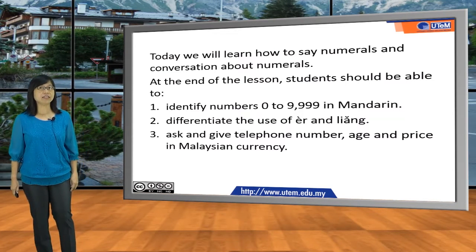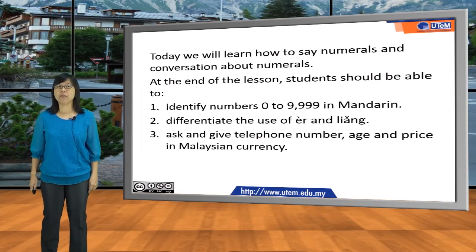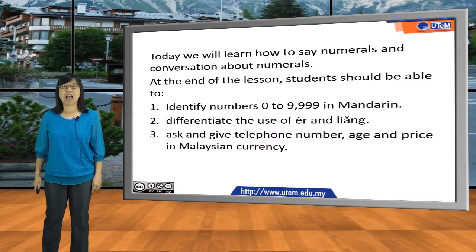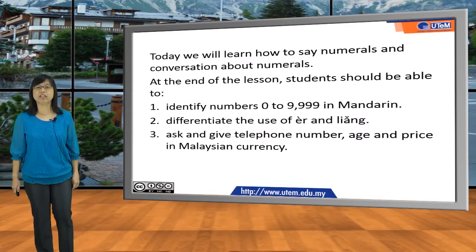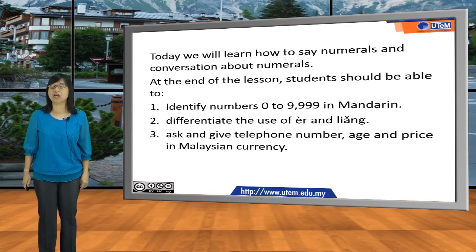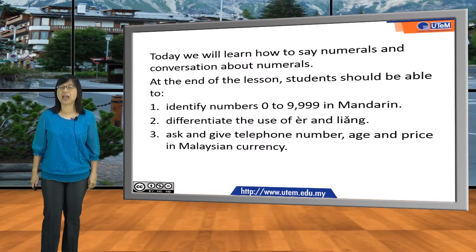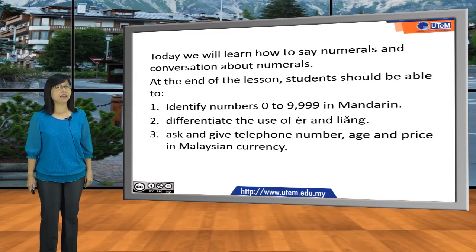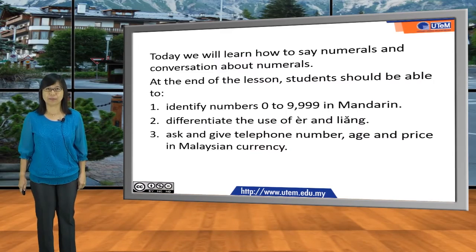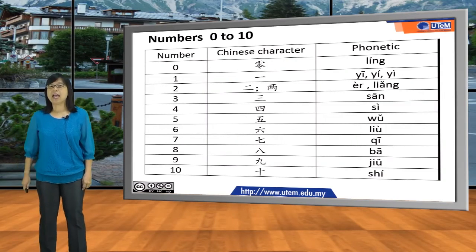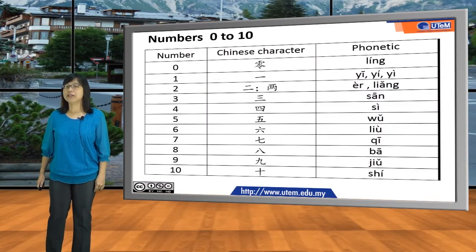At the end of the lesson, students should be able to identify numbers 0 to 9999 in Mandarin, differentiate the use of 二 and 两, ask and give telephone numbers, and prices in Malaysian currency. Okay, let the counting begin.